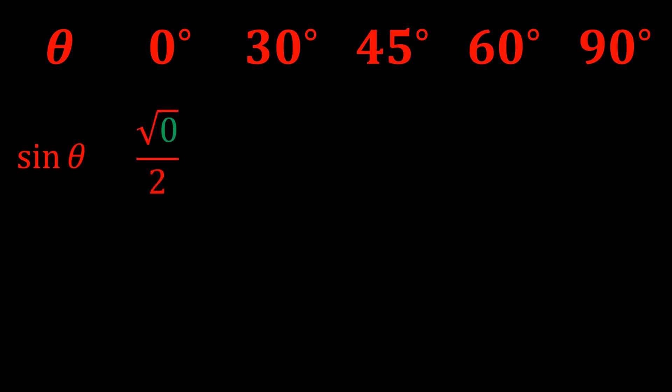Sine zero degrees is root zero on two. The next one is root one on two, and then root two on two, and then root three on two, and root four on two is the last one.